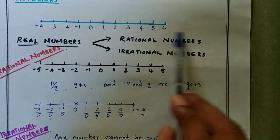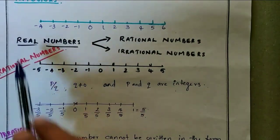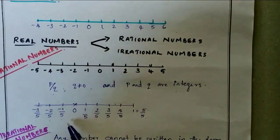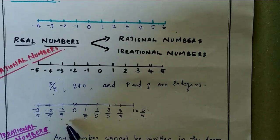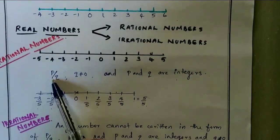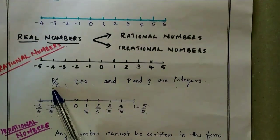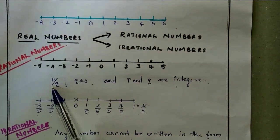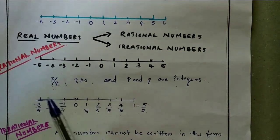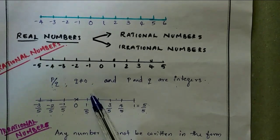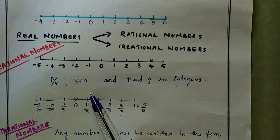So rational numbers are numbers that can be written in the form of p by q, where p and q are integers and q is not equal to zero.